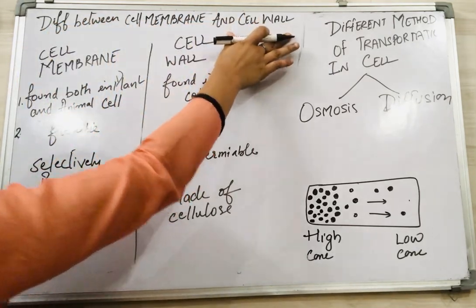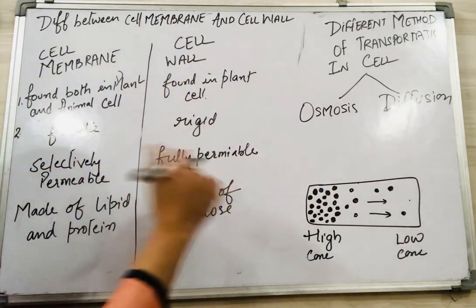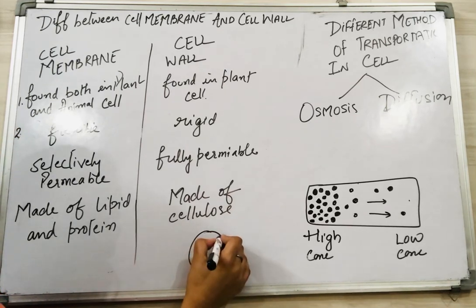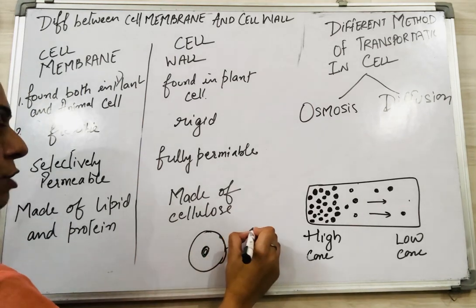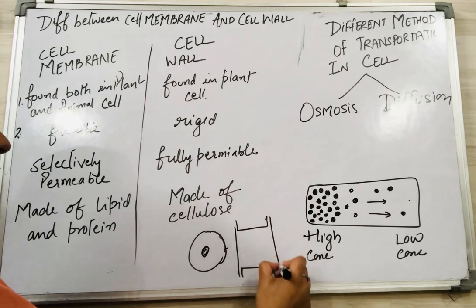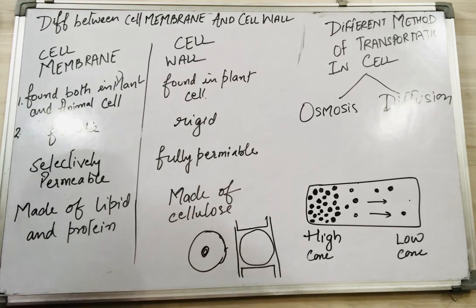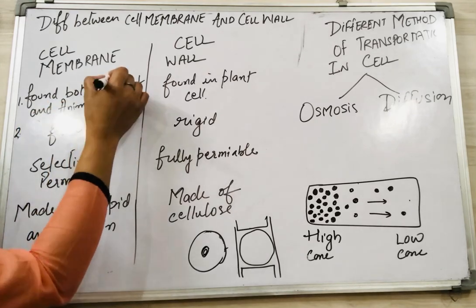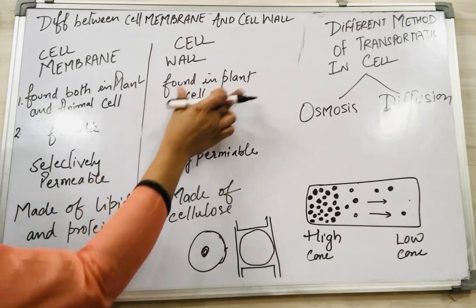The cell membrane and the cell wall are basically the outermost covering of the cell. Every living cell has an outermost layer. In the case of an animal cell, the cell membrane is the outermost layer. In the case of a plant cell, the cell wall is the outermost covering, and in between there is a plasma membrane or cell membrane. So the cell membrane is found both in plants and in animal cells, whereas the cell wall is found only in the plant cell.